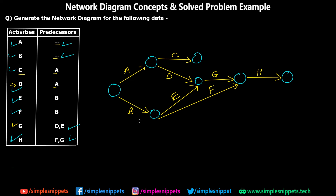In this specific numerical we did not have any dummy activity — which would be represented by a dotted line. In the next video we'll see a numerical that actually uses a dummy activity, since this was a simple introductory example. We'll solve more than one numerical for better practice. That's it for this video — I hope you understood what a network diagram is, the terms and concepts involved, the common errors, and the practical numerical example.